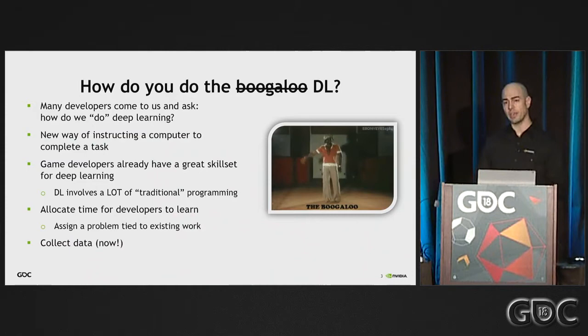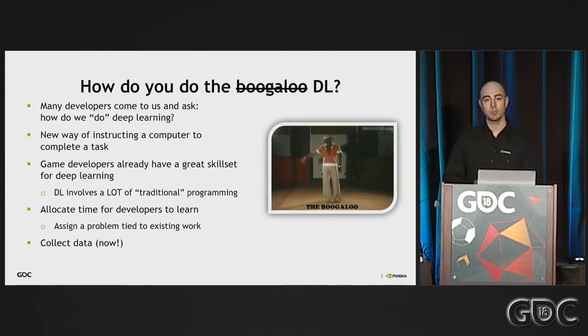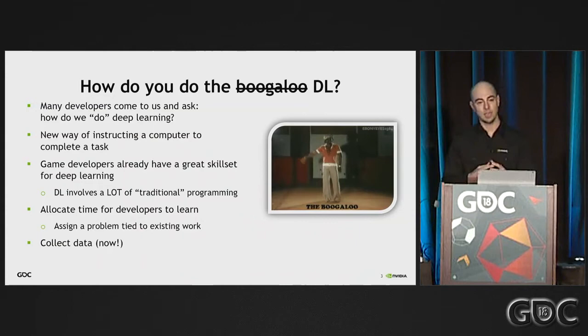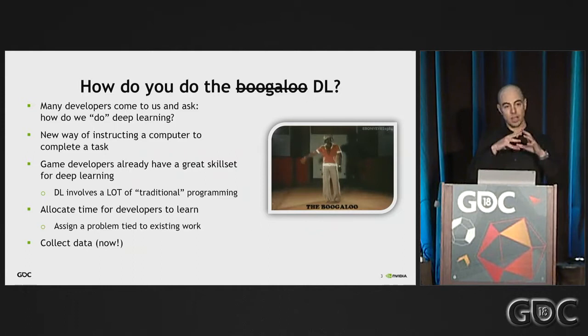One of the big changes is that rather than thinking of a problem, breaking it down into rules, and programming each individual thing, it becomes more of a statistical problem. We have a solution we're searching for and a large set of data. Deep learning has the machine work out a highly complicated statistical function that takes an input and generates the output we're looking for.